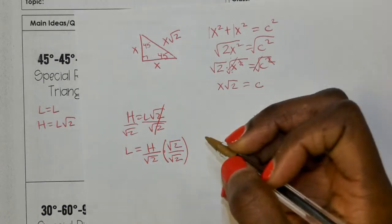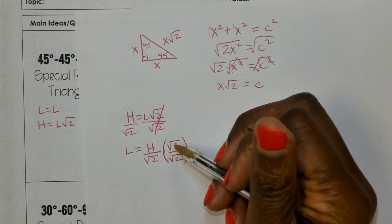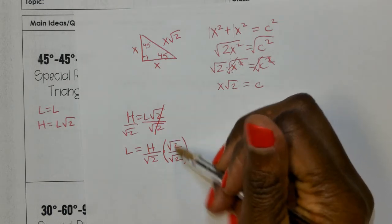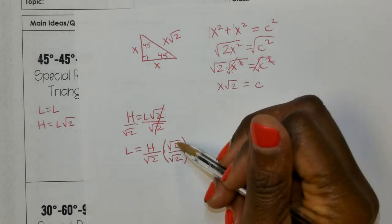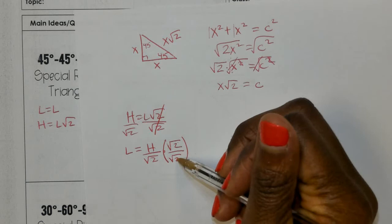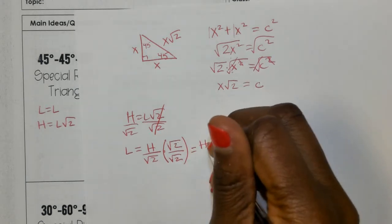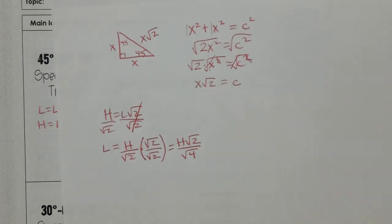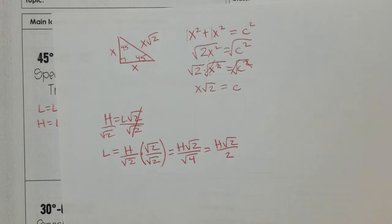It's not proper form to leave a radical in the denominator, so we rationalize the denominator by multiplying by radical 2 over radical 2 — we're not changing the value, just the presentation. This gives us H times radical 2 over the square root of 4. The square root of 4 is 2, so L equals H times radical 2 over 2.